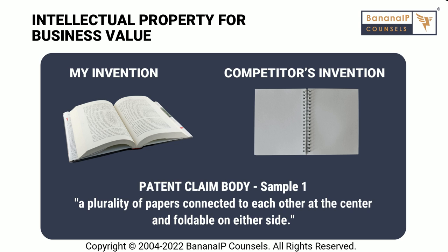If you look at the claim, what is being claimed is a plurality of papers — that means more than one paper — and these plurality of papers are connected to each other in the center and they can be folded. So there are three elements in this claim: a plurality of papers, a connection in the center, and they are capable of being folded. If all three are present in the competing product — the spirally bound book — then this claim would be infringed and there will be patent infringement. Even if one of these elements is missing, there will be no patent infringement.